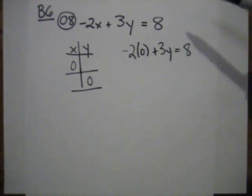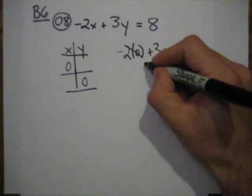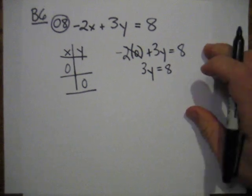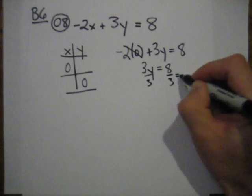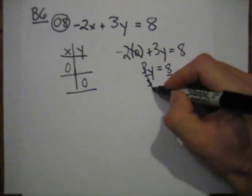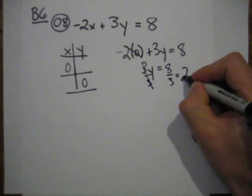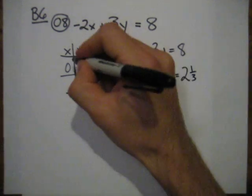Okay, that's an x value of 0. So negative 2 times 0 is 0, and I'm left with 3y equals 8. And I divide by 3, and I get 8 thirds. Y is 8 thirds when x is 0. I'm going to write 8 thirds as a mixed number so I can graph it a little bit easier, 2 and 1 third.